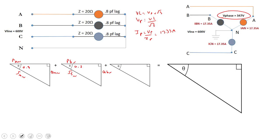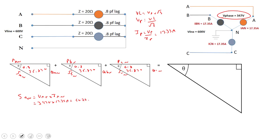A power factor of 0.8 in the calculator works out to 36.87 degrees, so all triangles are at the same angle. To calculate the apparent power: S_A-to-N equals V_A-to-N times I_A-to-N, which is 347 volts times 17.35 amps, coming out to about 6020.45 VA.